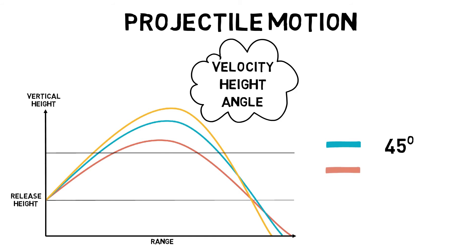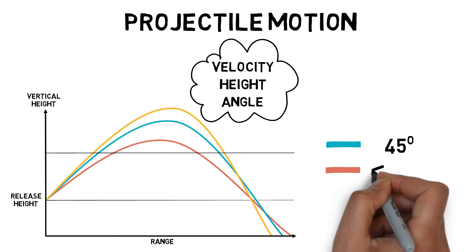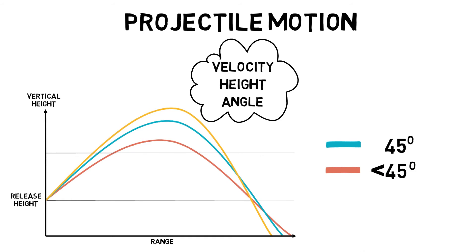If the release height is greater than the landing height, then the optimal release angle is less than 45 degrees, such as a shot put. If the release height is less than the landing height, then the optimal release angle is greater than 45 degrees, such as a bunker shot in golf.